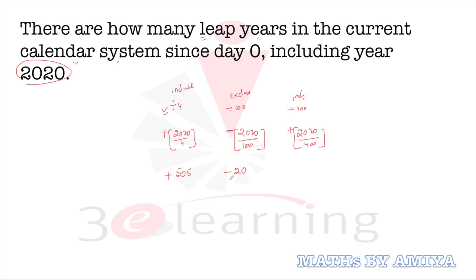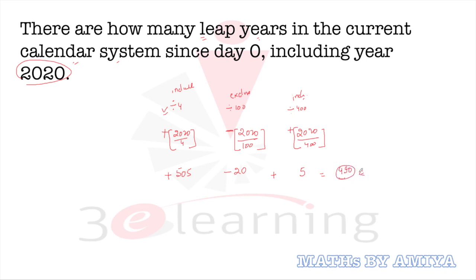The minus sign means exclude. 2020 divided by 100 is nothing but 20, so we have to exclude 20 years because they are divisible by 100. But we have to include 5 years because they are also divisible by 400. So finding leap years is a process of inclusion, exclusion, inclusion: first divide by 4 and count, then divide by 100 and subtract, then divide by 400 and add. The total value is nothing but 490. So we have 490 leap years in our current calendar system including 2020.